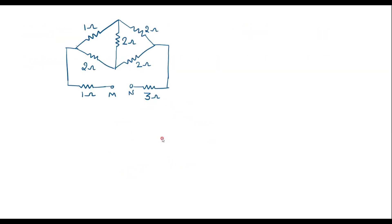Let me redraw the circuit. Here we can see that, let me call this as node A, B, C, and D. The resistances 1 ohm, 2 ohm, and 2 ohm — connected between nodes A, B, C, and A — are in delta fashion.